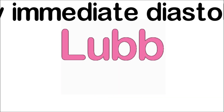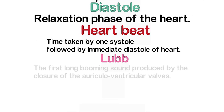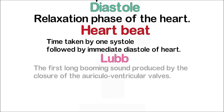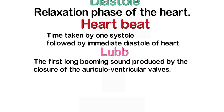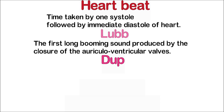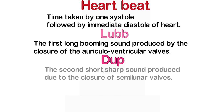Lubb is the first long booming sound produced by the closure of the auriculoventricular valves; it is called the first heart sound. Dup is the second short, sharp sound produced due to the closure of semilunar valves; it is called the second heart sound.